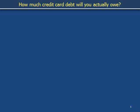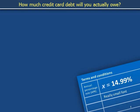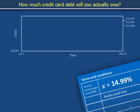How much credit card debt do you actually owe? Your terms and conditions say that you have an interest rate of x equals 14.99% as an annual percentage rate, or APR. To understand an APR, we need to understand interest compounded according to different schedules.